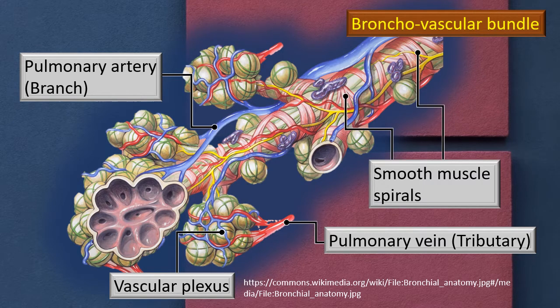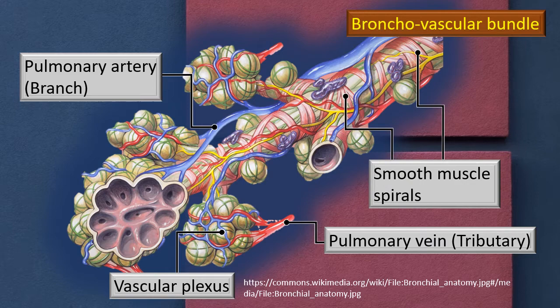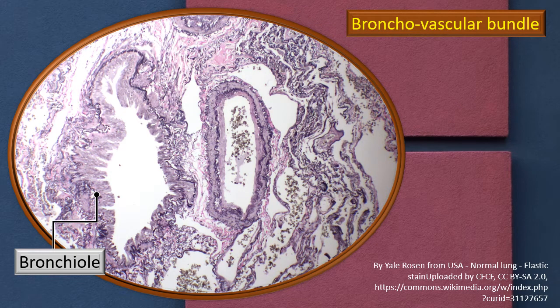The smooth muscle in the tracheobronchial tree is very unique because it is not exactly circular — rather it is more of a spiral. This spiral orientation of smooth muscle fibers in the bronchi and further down is particularly important because contraction not only enables the lung to expand, but when the muscles contract they also reduce the lumen and help push air towards the trachea.